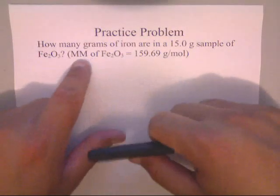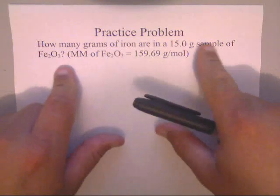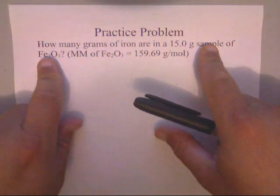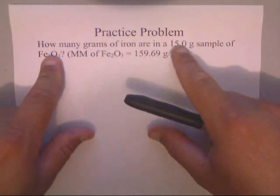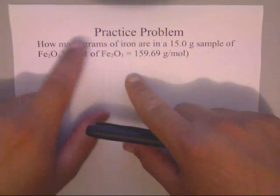Alright guys, in this video I'm going to show you how to take grams of an entire sample, which in this case is a metallic compound, iron three oxide (Fe₂O₃), and convert it to just grams of one of the ions.